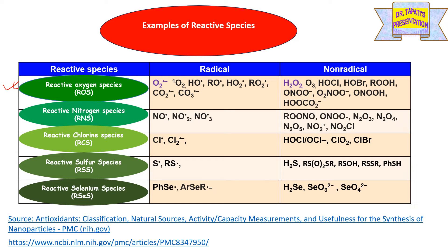Along with reactive oxygen species, there are several other reactive species including reactive nitrogen species, reactive fluorine species, reactive sulfur species, and reactive selenium species. They are very good oxidizing agents and can be easily converted into radicals. This table shows various examples of reactive species and their radical and non-radical forms.